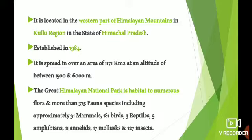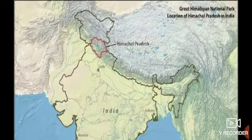The Great Himalayan National Park habitat is numerous flora and fauna. Here we get almost 375 fauna species, from which we can find 31 mammals, 181 birds, 3 reptiles, 9 amphibians, 11 annelids, 17 molluscs, and 127 insect species. For this reason, the area is of great importance for biodiversity, because we are getting to see a variety of species here.